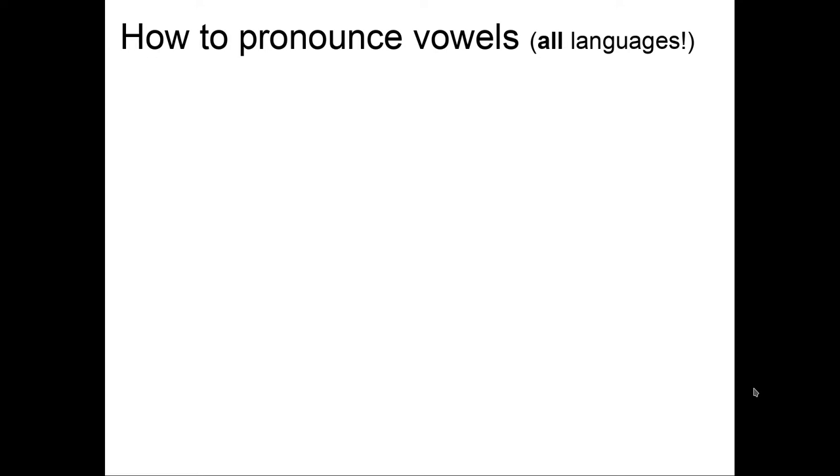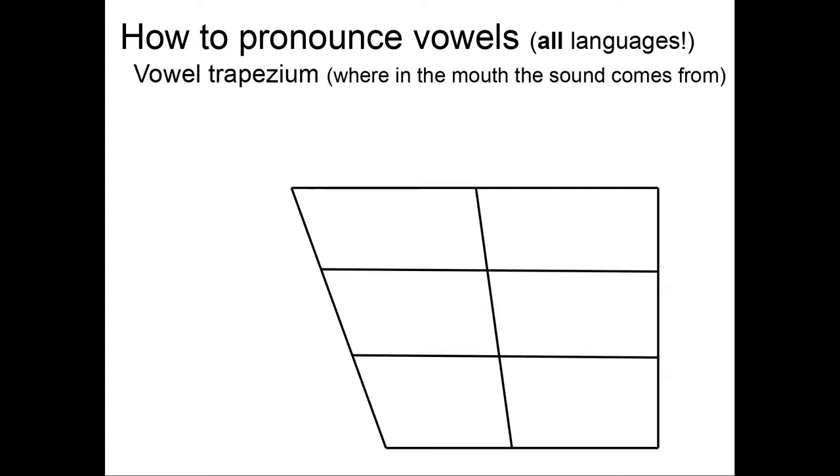So I told you that there are some vowels that do not exist in English, so how do you pronounce them? Well, there are three characteristics for a vowel. And they are all in this graph, in this drawing, called the vowel trapezium. It's related to where in the mouth the sound comes from. The first characteristic is if the vowel is closed or open.